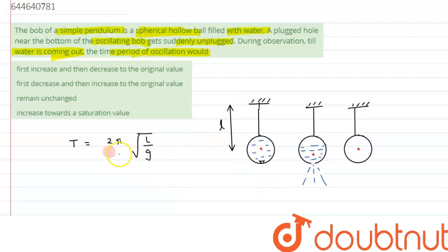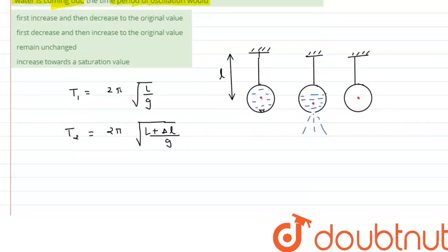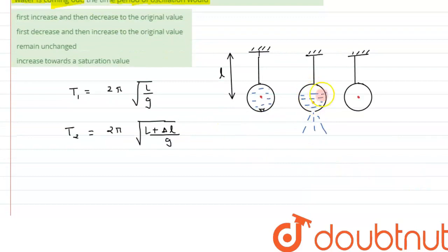This is for the first case, the time period will be 2π under root l by g. For the second case, it would be 2π under root of l plus delta l over g, where the length is increased by delta l, and time period will increase.